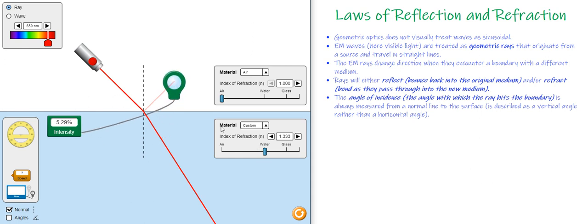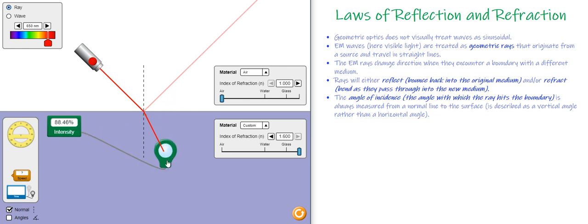However, if I make the refractive index of the material down here, if I make that refractive index higher, I actually see that more of the light reflects than it did before. But still more of it is refracting.